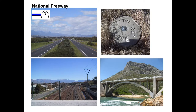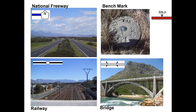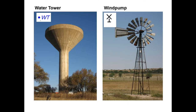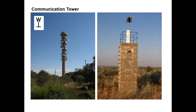There we have our national freeway, our benchmark, railway and a bridge. Here we have a water tower in blue because it resembles water. We then have our wind pump. A communication tower looks as follows.